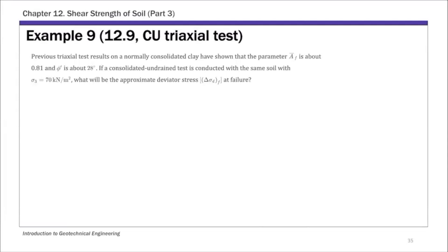This is example 9 of chapter 12, and this example is a consolidated undrained, or CU, triaxial test. For this example, we are given basically the results from a previous triaxial test. We have the Skempton's parameter A-bar at failure, which is 0.81, and the drained friction angle phi prime is 28 degrees. We are going to conduct a consolidated undrained triaxial test.